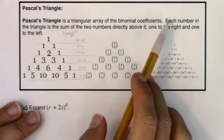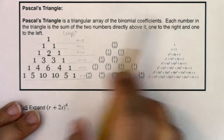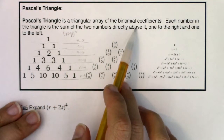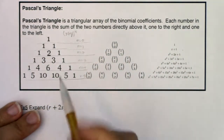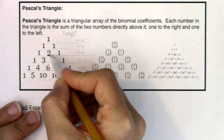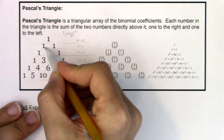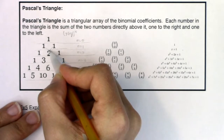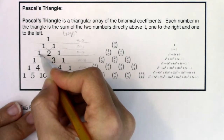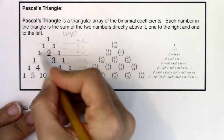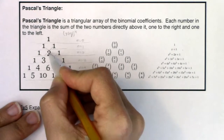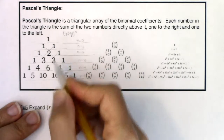Let me show you how this rule plays out. Each number in the triangle is the sum of the two numbers directly above it, one to the right and one to the left. Think about the number two: one to the left plus one to the right gives one plus one equals two. Think about the number three: one plus two is three, and two plus one is three.